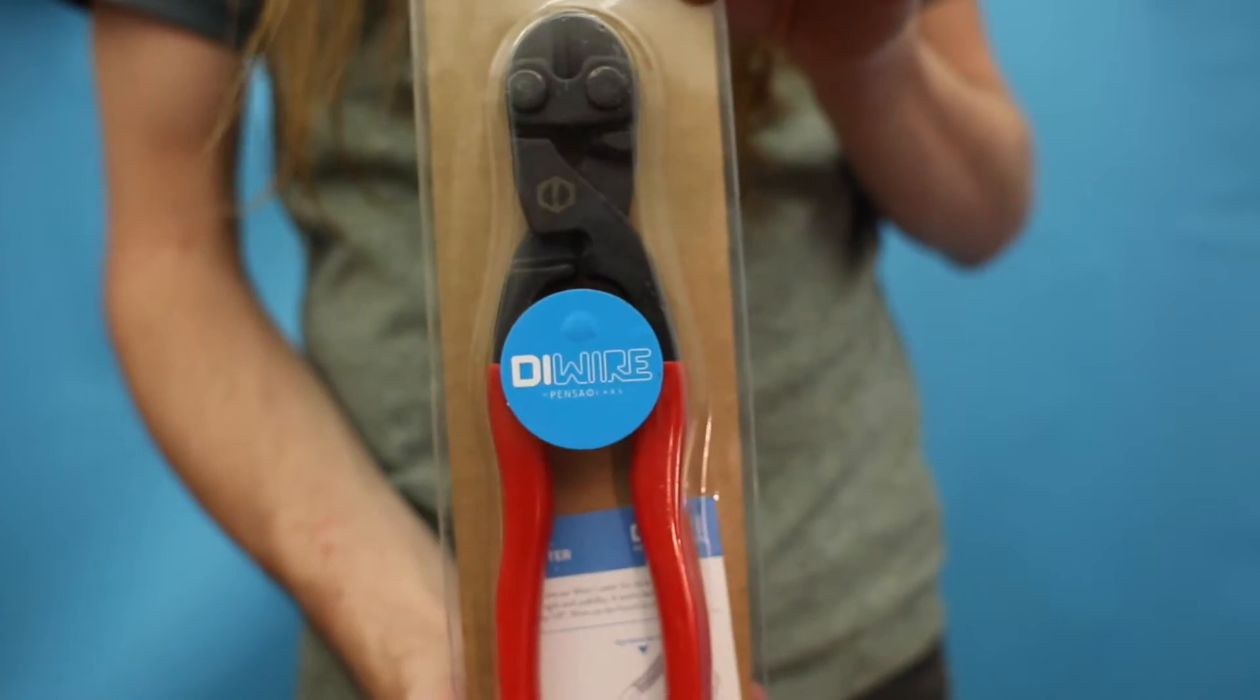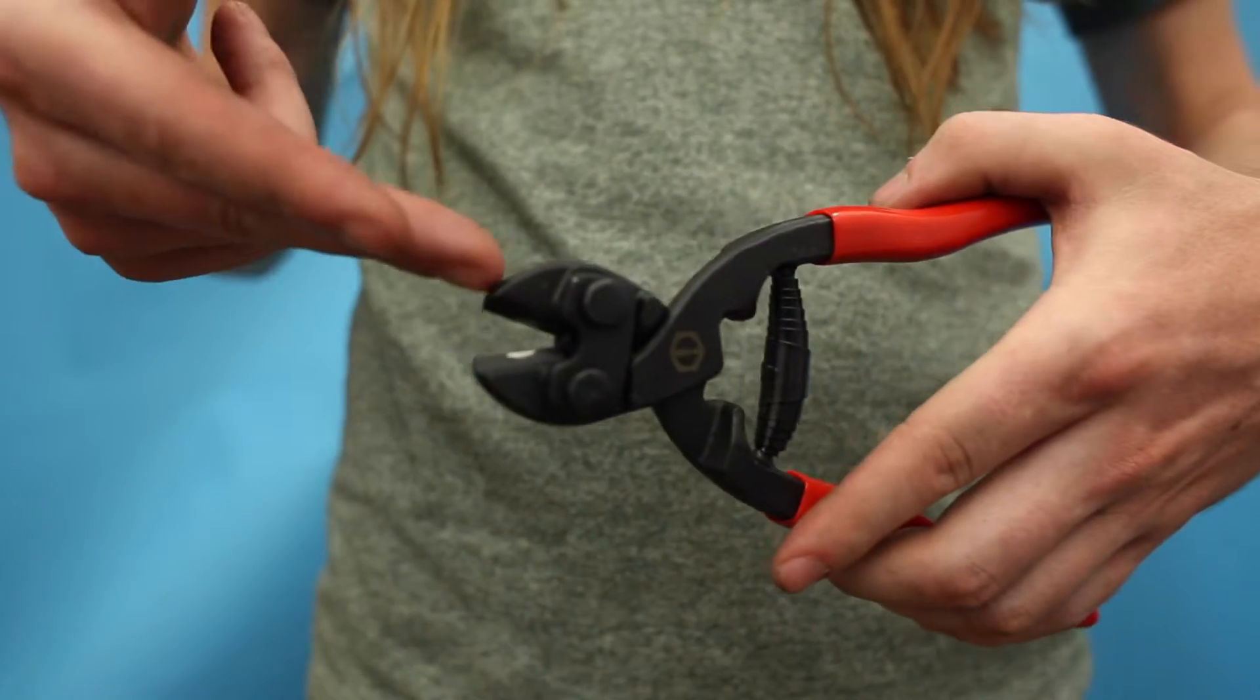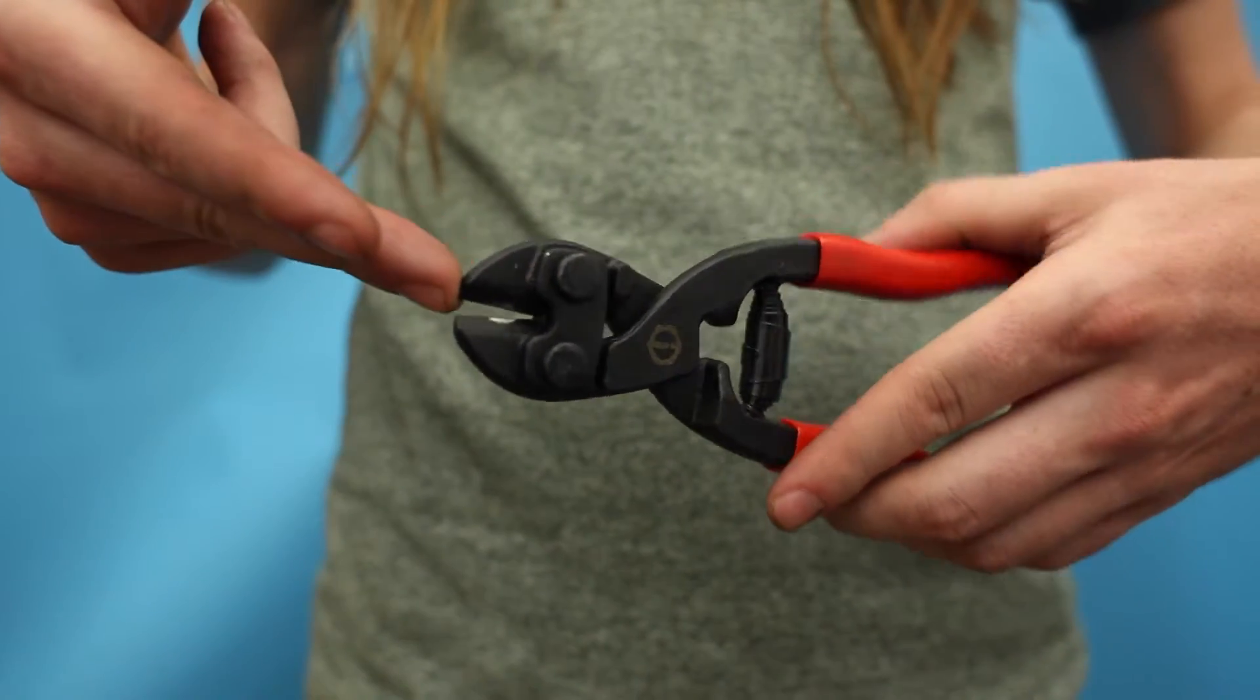These 8-inch wire cutters are spring-loaded and made of drop-forged steel. They're sharp, strong, and durable, so you can be sure you're getting clean and effortless cuts with most types of wire.